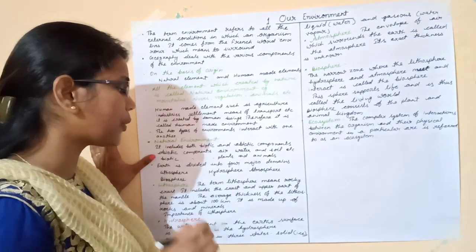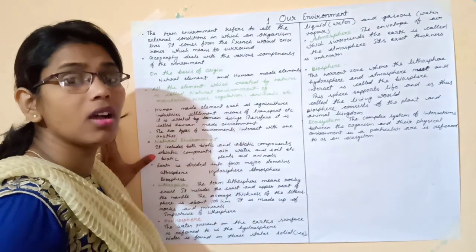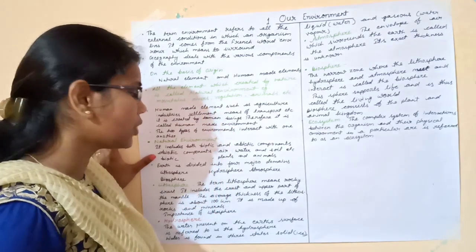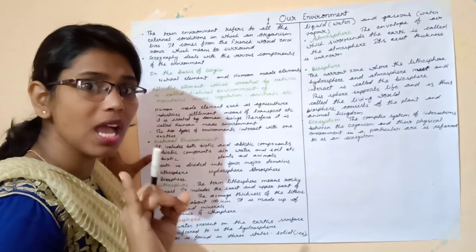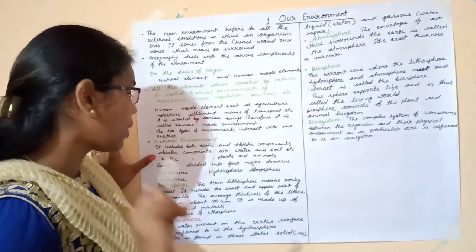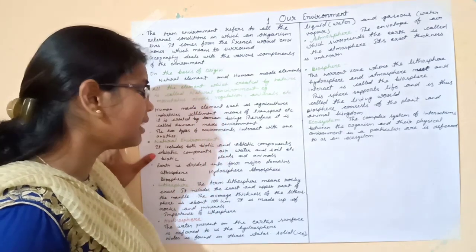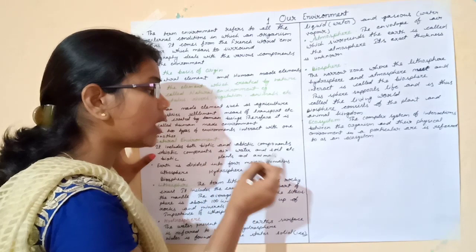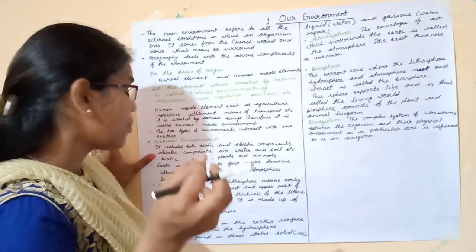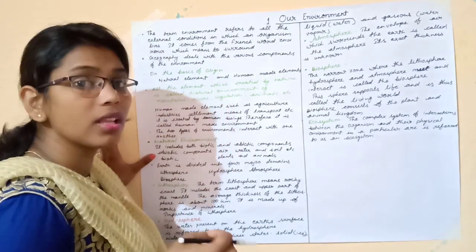All living things come under the biotic component — for example, plants and animals which have life. They are considered biotic components. All non-living things such as air, water, land, and soil come under the abiotic component, because they do not have life.